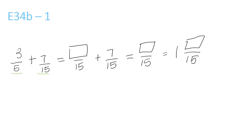Bottom number: 5 and 15 both go into 15. 5 times 3 is 15, so 3 times 3 is 9. And they've done this for us — we just bring the 7 over 15 over. Now we have 9 plus 7, which is 16. The top number is bigger than the bottom number, so that means we have to make it a mixed number. 15 goes into 16 once, which is why they have the 1 in front. Remainder: 1 over 15, because the over 15 stays the same.